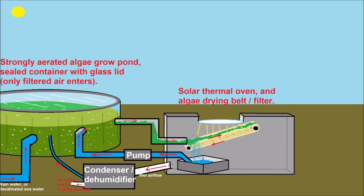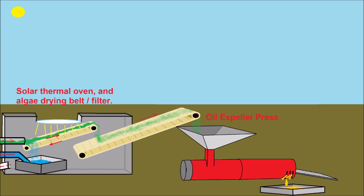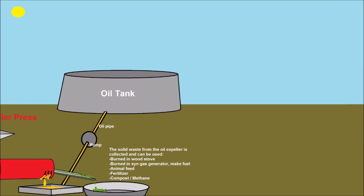The moist air coming off the algae as it dries can be blown through a condenser and the water can be pumped back into the pond. After it's passed through the drying oven, the algae follows another conveyor to an oil expeller press. This divides the algae into triglyceride vegetable oil and solid leftovers. The oil is pumped to a storage tank and the solid part will be used for something else.